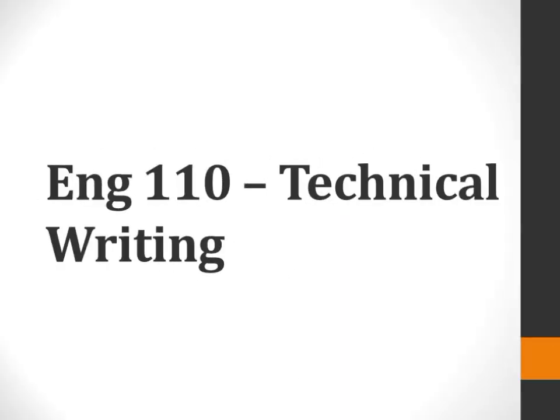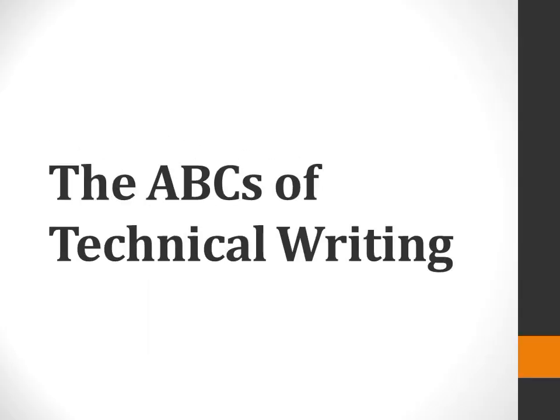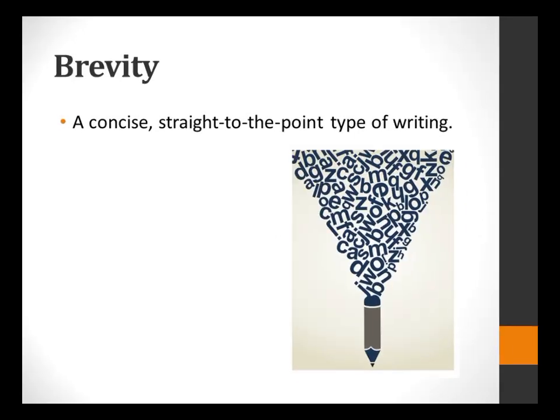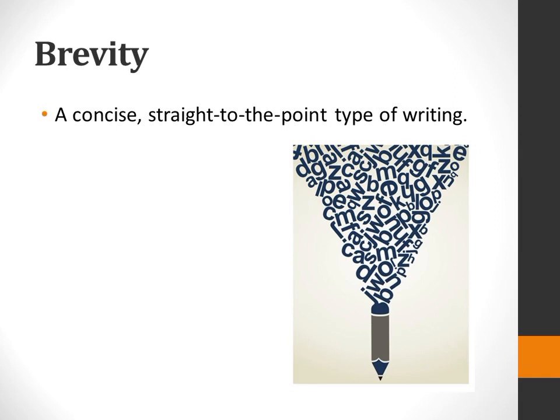English 110 Technical Writing — ABCs of Technical Writing. A for Accuracy: Technical writing should be accurate. The use of precise words, coherent sentences, well-developed paragraphs, and a balanced report are needed.